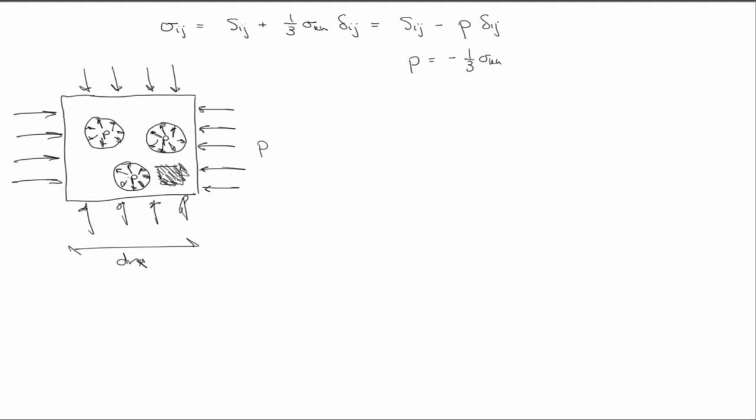Any little patch within this solid is going to be under a hydrostatic stress equal to minus p δij. That's because the total stress tensor is the deviatoric stress plus the pressure, but in this case there's no deviatoric stress — this is under an equilibrium hydrostatic stress.